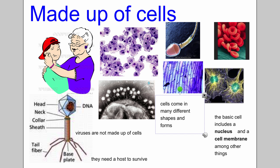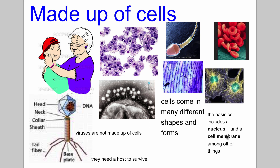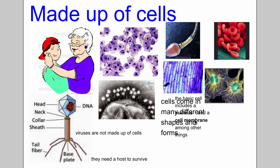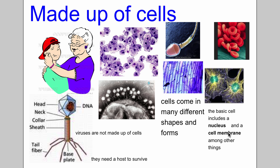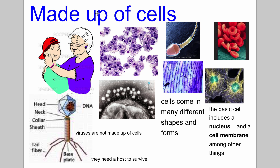Cells come in many shapes and forms. The basics of what a cell includes are a nucleus and a cell membrane. We're going to talk specifically about what the nucleus and cell membrane do later. That's characteristic number one: living things are made up of cells.